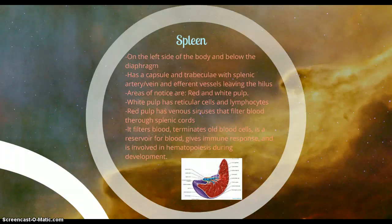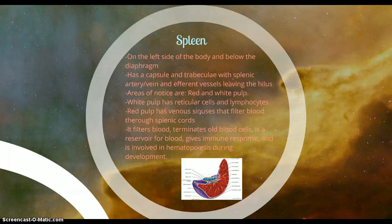The last organ we need to talk about is your spleen. It's on the left side of the body and below the diaphragm. It has a capsule and trabeculae, and it also has splenic veins and arteries. It does have efferent vessels, but it does not have afferent vessels. Areas to note are your red and white pulp. White pulp has reticular cells and lymphocytes, and red pulp has venous sinuses filled with blood that are filtered through splenic cords. Splenic cords are made up of reticular cells, macrophages, and lymphocytes — basically all of the lymphoid cells.